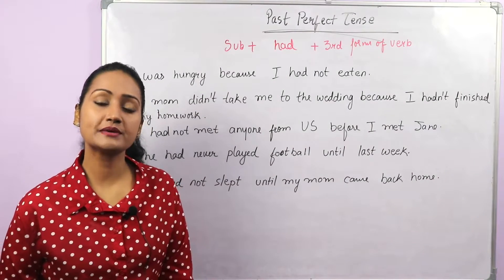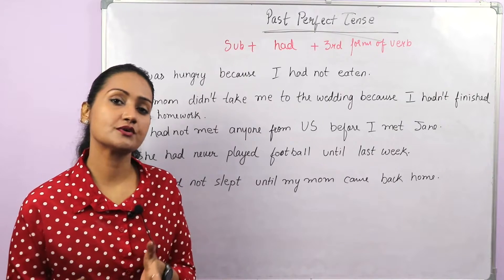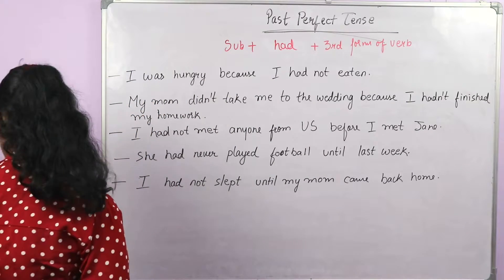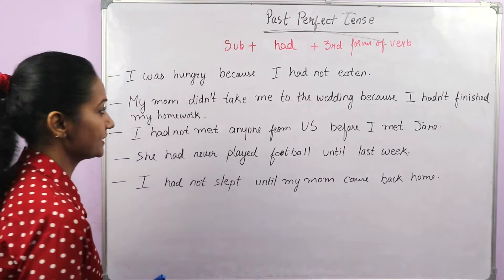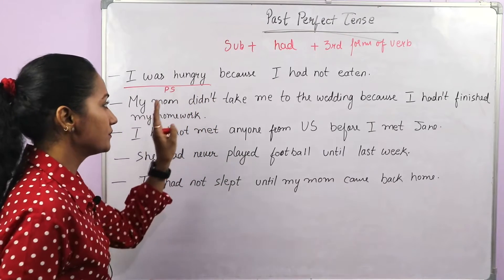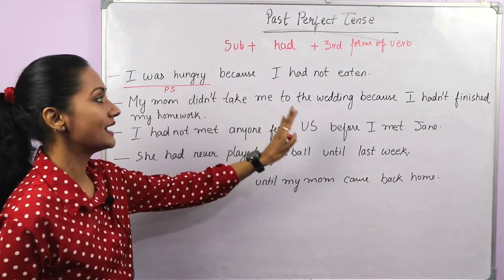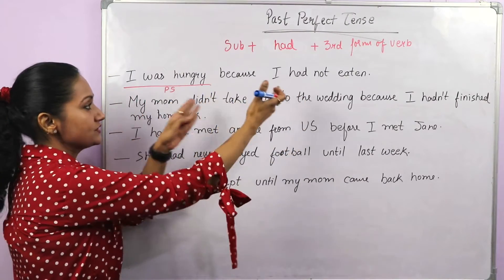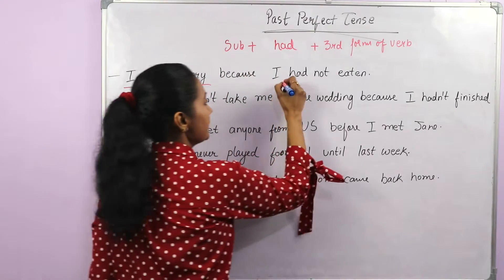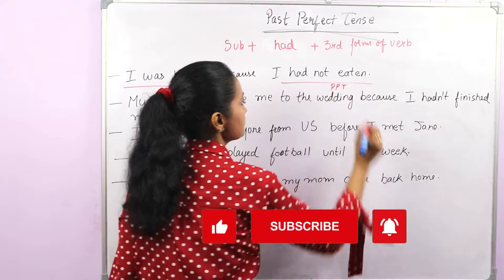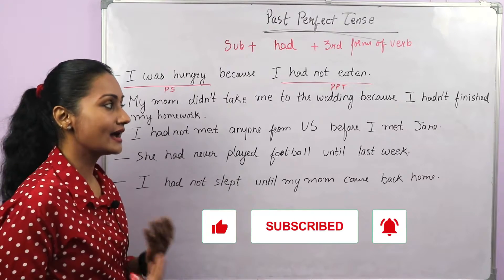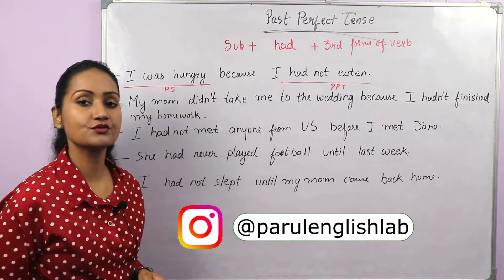We've seen how to make positive sentences in past perfect tense. Now let's look at some negative sentences. First: 'I was hungry because I had not eaten.' This is a past action — 'I was hungry' is past simple. Why was I hungry in the past? Because 'I had not eaten' — that is past in past, so past perfect tense. The rule for negative: subject plus 'had not' plus third form of the verb. 'Hadn't' is the contracted form of 'had not'.